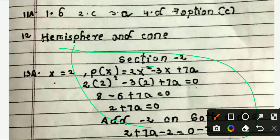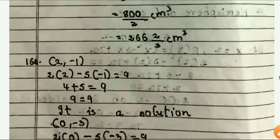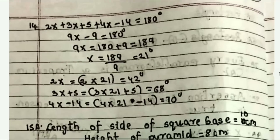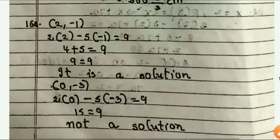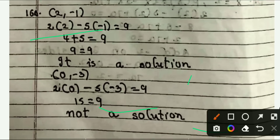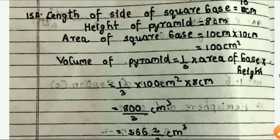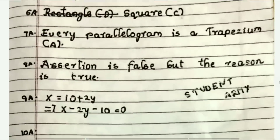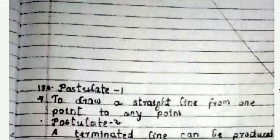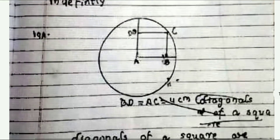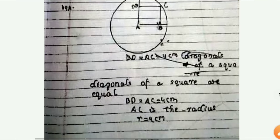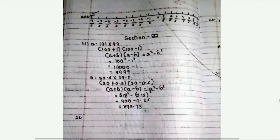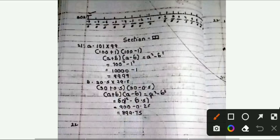This is answer 13 — Section 2. Then answer 11, answer 16, answer 15, answer 16. Next answer 18, answer 19. Then answer 20, question 21, 22, 23, 24 — all questions you can see.